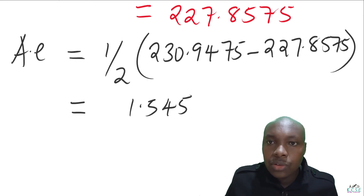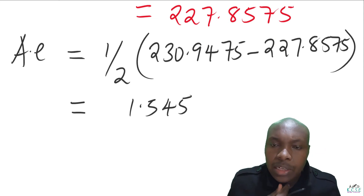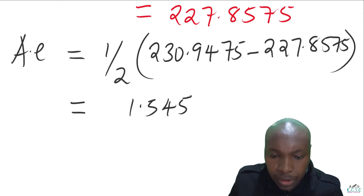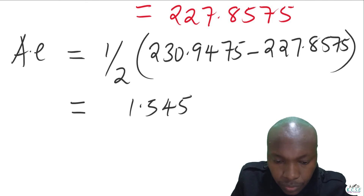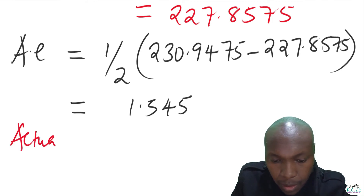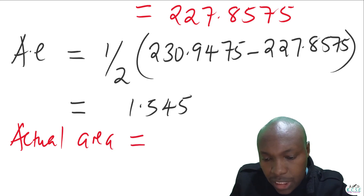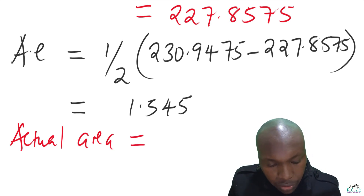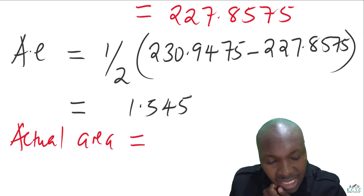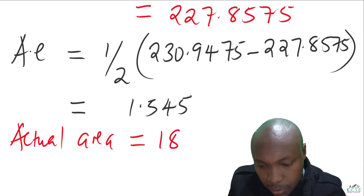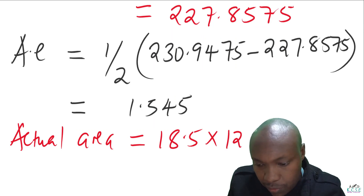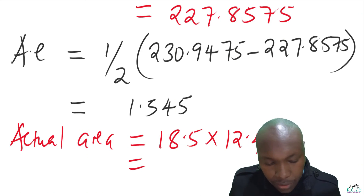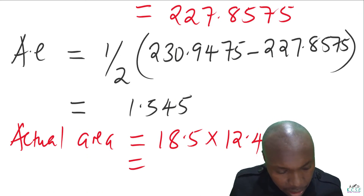Next, we need the actual area, obtained using the original measurements: length 18.5 and width 12.4. Multiplying these together gives an actual area of 229.4.